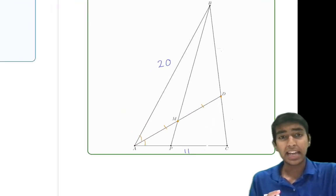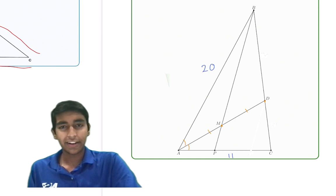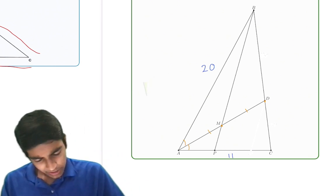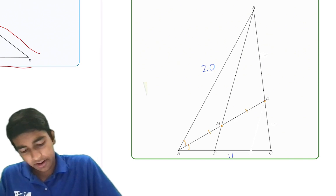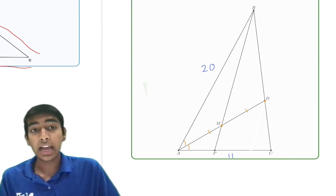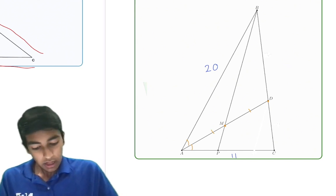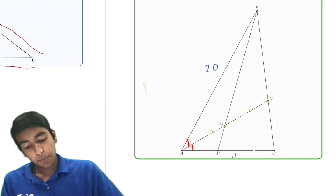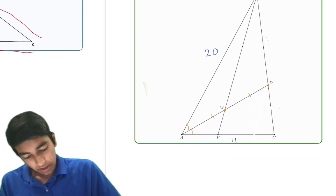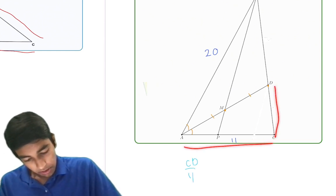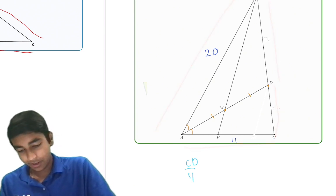And we're asked to find the ratio CP to PA. That seems very crazy, doesn't it? We can't just use angle bisector theorem to find the answer, but we can use it as one step of the problem. So first of all, what does angle bisector theorem tell us? Angle bisector theorem tells us that CD over 11 equals BD over 20.